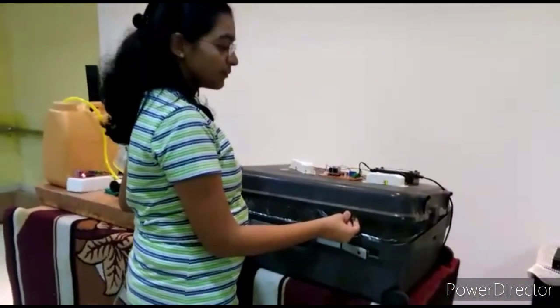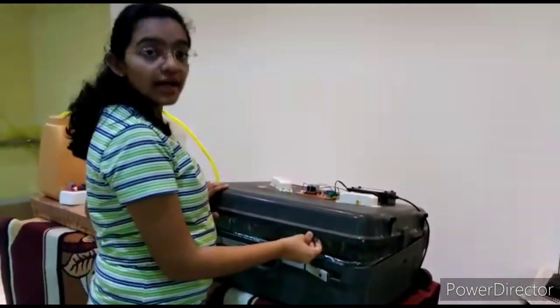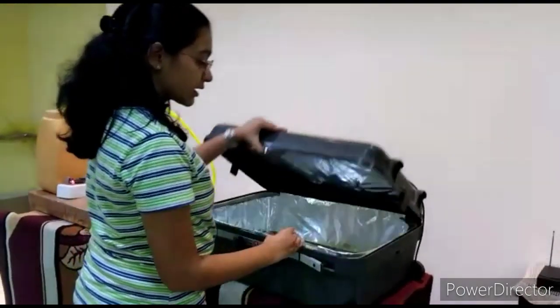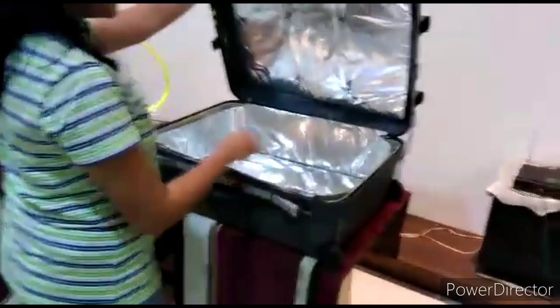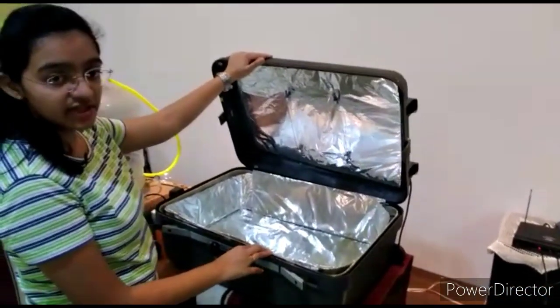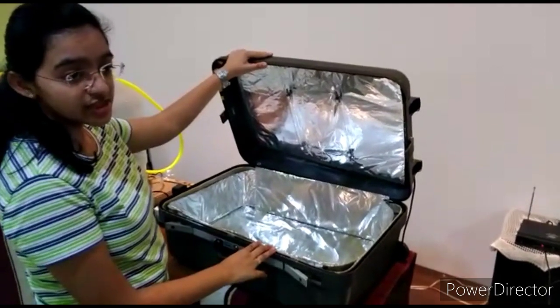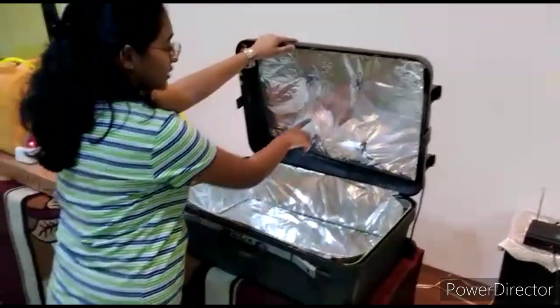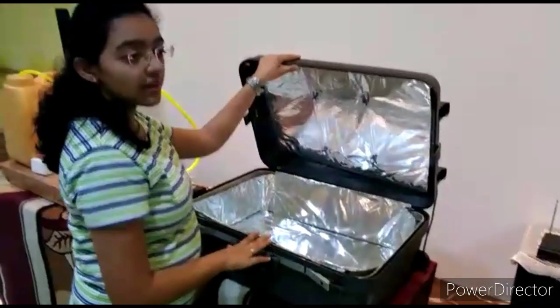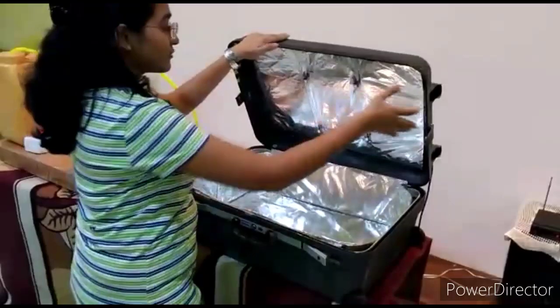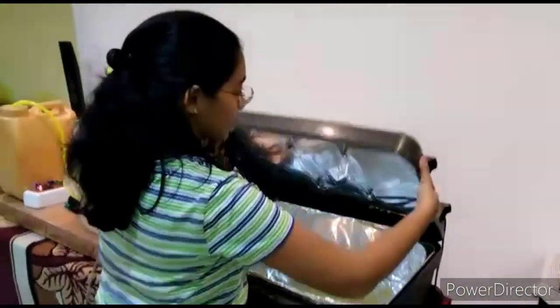I have used an old suitcase as a sanitizing chamber. A wooden box or any other container can be used. The container is covered with aluminum foil from all sides to form the reflective surface for maximum utilization of UV lights. The main components here are the UV lights, which are the only components present inside the chamber.